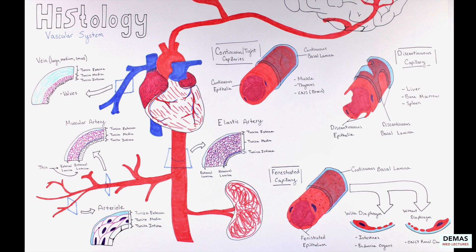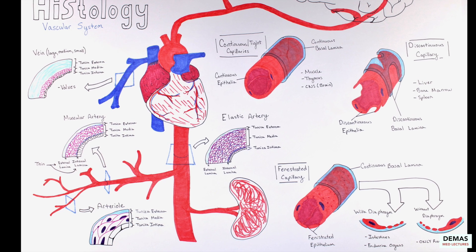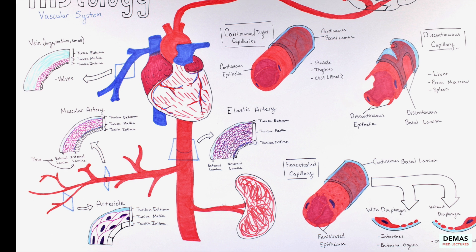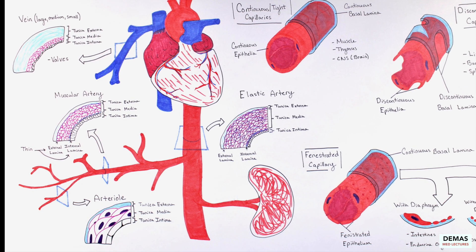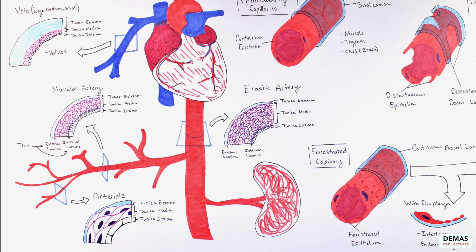We talked about the arteries and veins and their histological structure on cross-section. Arteries need to withstand greater pressure than veins, so they have more elastic and pressure-resistant construction.